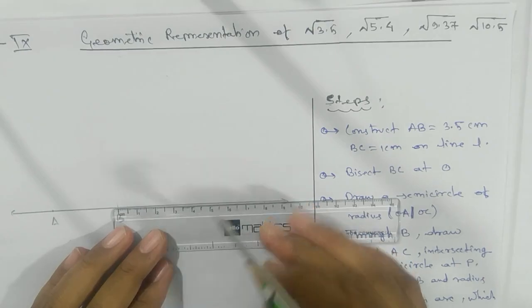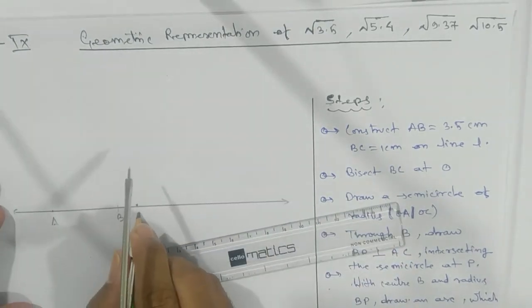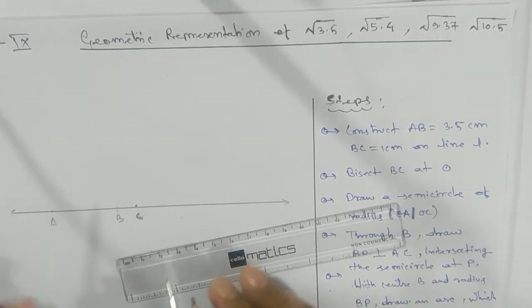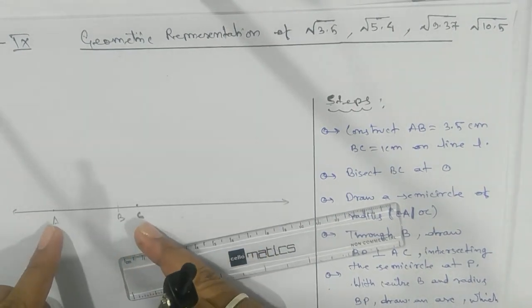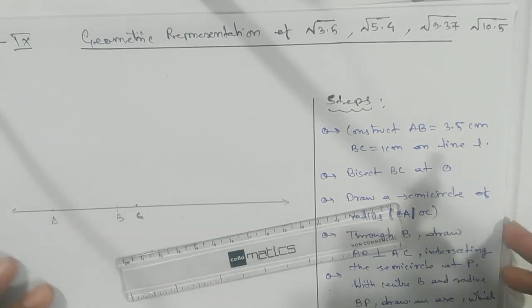How are we going to bisect? We know that perpendicular bisector - remember? We'll use that one. Okay, so what we're going to do: take the arc length more than half of AC and take an arc on both sides.